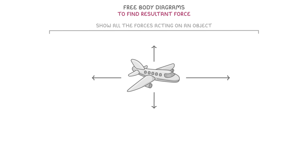So it would have one going forwards, which would be its thrust, one backwards for air resistance or drag, one downwards for its weight, and one upwards for its lift.